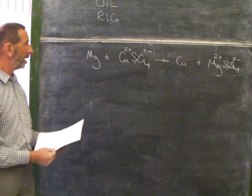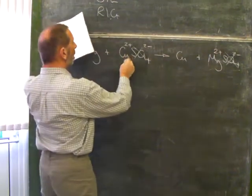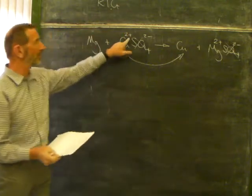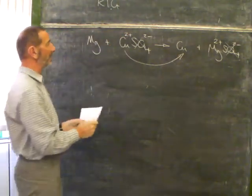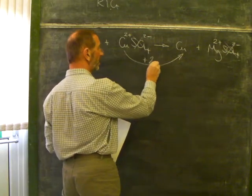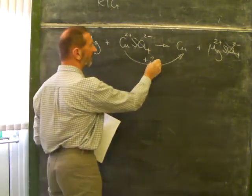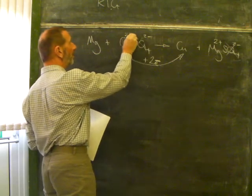It started as sulfate and it's finished as sulfate. It's a spectator, so we can pretty well ignore it. What have the other species done? Well, the copper, the copper ions have become copper metal. Something has removed its 2 plus charge. What has happened here is that copper has gained electrons. It's gained two negative electrons.